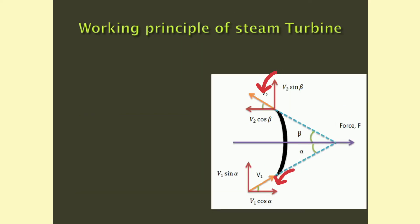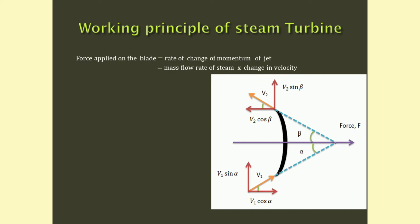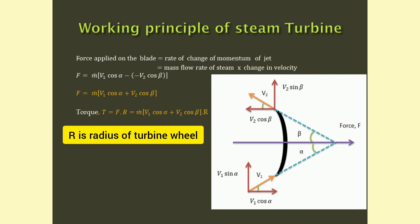Look at the figure — I resolved velocity into its components. The force developed on the blade equals the rate of change of momentum of the jet in the direction of force, that is, mass flow rate of steam multiplied by change in velocity. So, f equals m-dot into (v1 cos alpha minus minus of v2 cos beta). When we remove the brackets, we get f as m-dot into (v1 cos alpha plus v2 cos beta). Torque is force into radius of the wheel, that is, f into r, which equals m-dot into (v1 cos alpha plus v2 cos beta) into r.